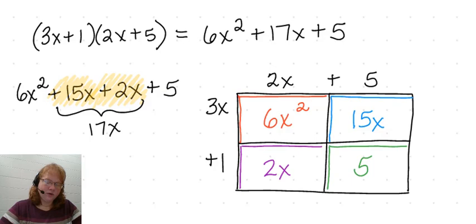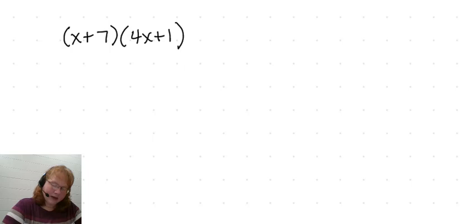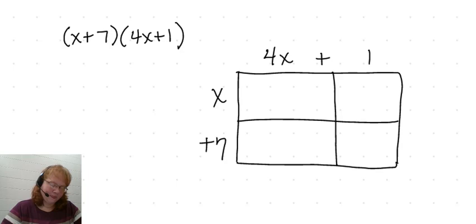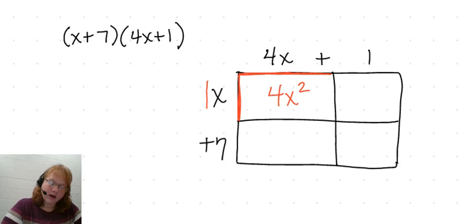Let's do another example. We're going to multiply x plus 7 times 4x plus 1. We're going to start by drawing our rectangle again, label the first dimension x plus 7, partition that into two parts, then label the top dimension 4x plus 1 and partition that into two parts. We're going to be looking at each individual rectangle. So let's look at the one that's 4x times x. When we multiply that, remember that the coefficient for x is 1, so 4 times 1 is 4 and x times x is x squared.